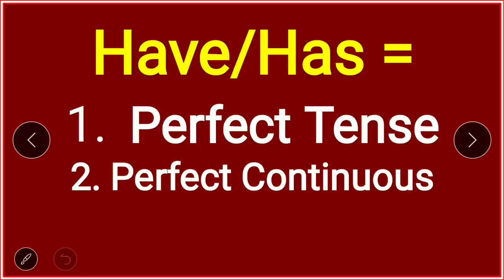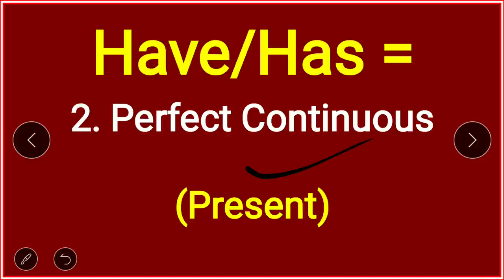Have and has with perfect tense — I have given you all examples. Now moving to perfect continuous. Remember: in perfect continuous tense, practically only the present tense is used. Past perfect continuous — have/has won't be used. Future perfect continuous tense is also not in practical use. So we only learn present perfect continuous.